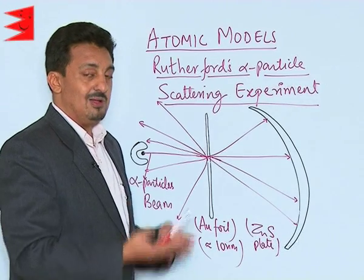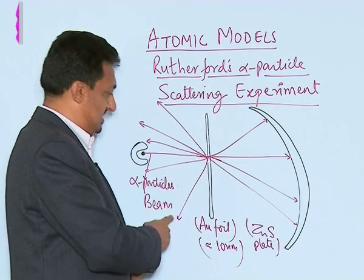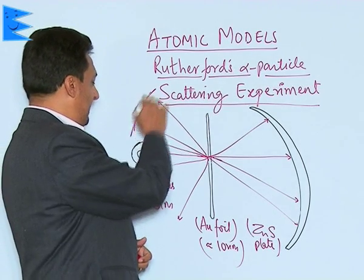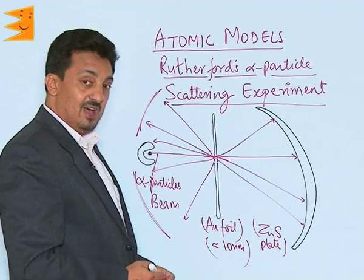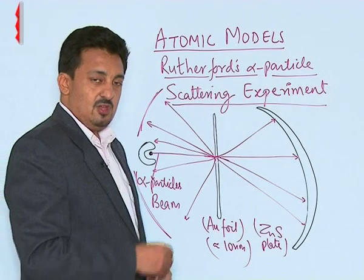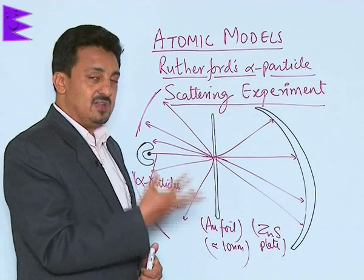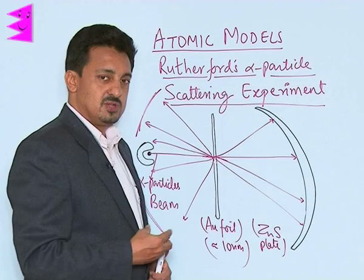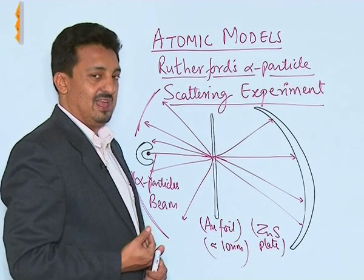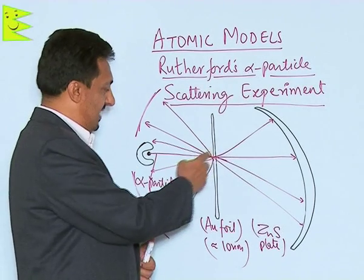But to his surprise, he also found that certain alpha particles were getting deflected from the thin gold foil and moving back. To observe them, he placed detector plates on the sides as well, and this is how he observed that certain alpha particles were bouncing back. He then counted those deflected by small angles and those deflected by large angles — nearly 180 degrees.